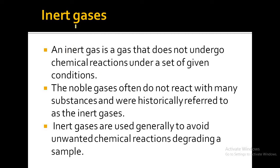Next we have inert gases. They are called inert gases because they are found in the gaseous state and are chemically inactive. They are chemically inactive because they have a completely fulfilled octet — their outermost shell is completely filled with eight electrons. The only duplet inert element is helium, because it has only one shell, which is filled with two electrons.